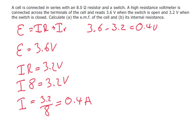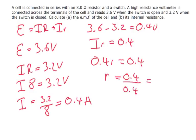And then finally, well 3.6 minus 3.2 is 0.4 volts. That's the voltage across the internal resistor. And now we know what the current is. Well, 0.4R equals 0.4. Therefore R equals 0.4 over 0.4, which equals 1 ohm. And that is our final answer, the internal resistance.